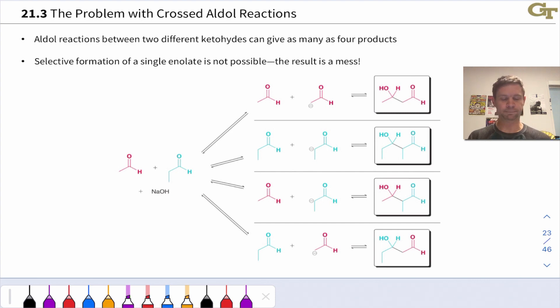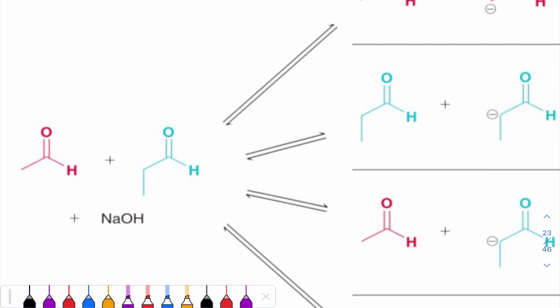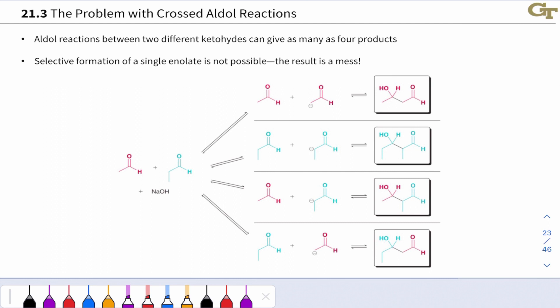Naively, we might approach this by saying: what will happen if I take acetaldehyde — this molecule in red — and mix it with propanol and a little bit of base? We want the enolate of acetaldehyde to add to neutral propanol, so acetaldehyde is the nucleophile and propanol is the electrophile. The problem is these are comparable in acidity, so hydroxide will deprotonate both and we'll get a mixture of enolates.